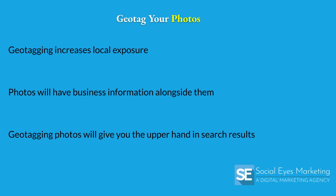Next, you can geotag the photos to increase local exposure. When you upload images to your Google My Business profile, you should take advantage of the geotagging option. If you pay attention to the local search results, you'll notice that Google has been showing more images, even for local results, and including business information alongside them. Google does this because visual content has become so popular. With many businesses not adapting quickly, it gives you an opportunity to be the first in your market to take advantage of the strategy. Make it a habit of posting images often, as it gives your feed a constant source of new content.